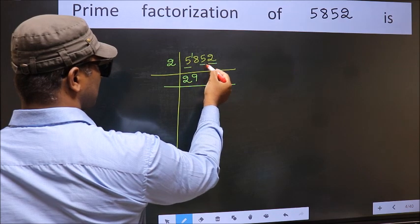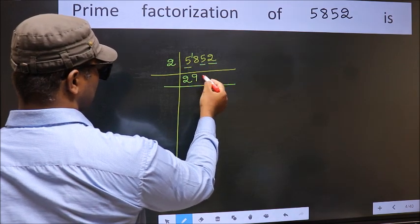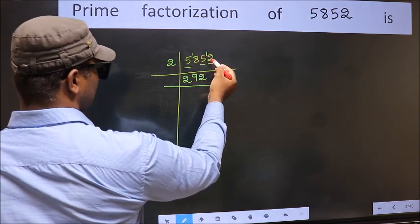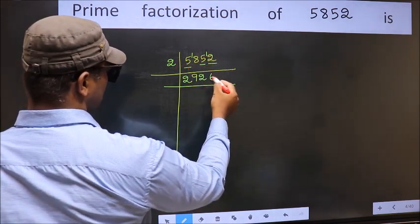The other number 5. A number close to 5 in 2 table is 2 times 2 is 4. 5 minus 4 is 1, 1 carried forward 12. When do we get 12 in 2 table? 2 times 6 is 12.